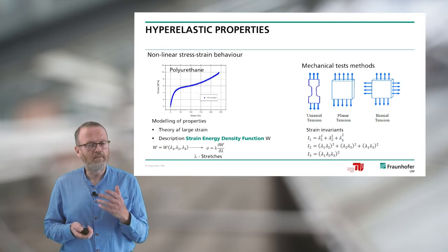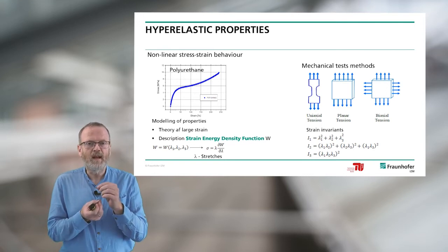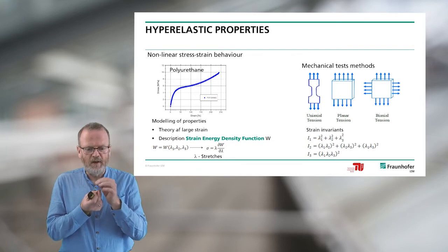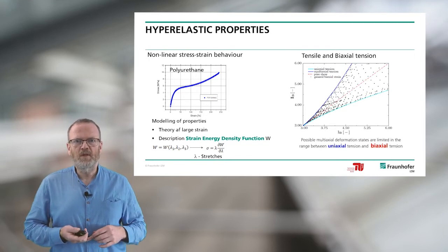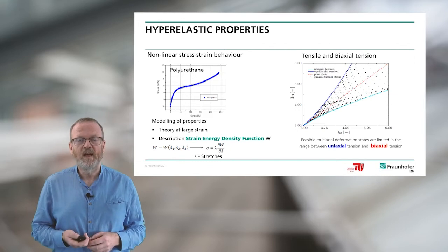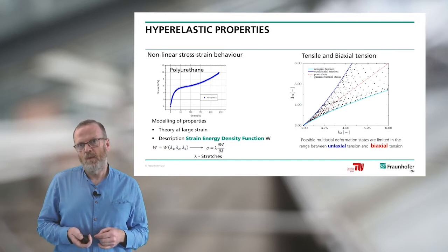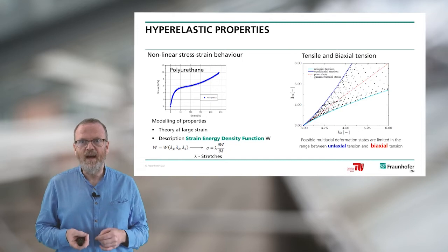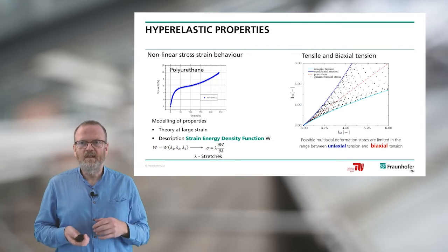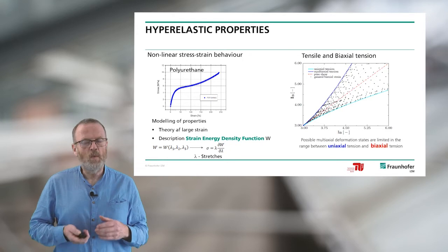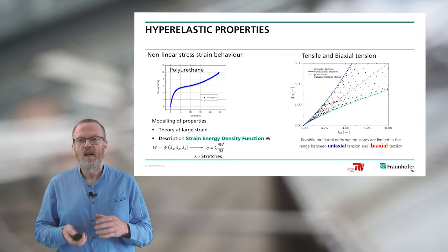You can see here the different mechanical test methods. We have uniaxial tensile, planar tension, and biaxial tension methods. Biaxial means we have one test and we analyze the deformation field in two different directions, Y and X. For analysis of the non-linear stress-strain behavior, we determine the hyper-elastic properties and describe them by means of the strain energy density function. On the right side, you see the tensile and biaxial tension results with three different curves covering the multi-axial deformation field.